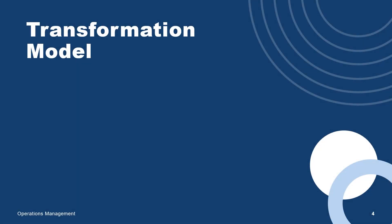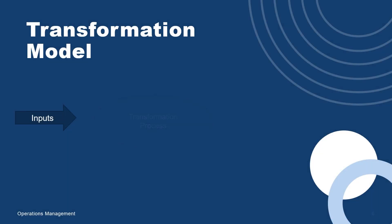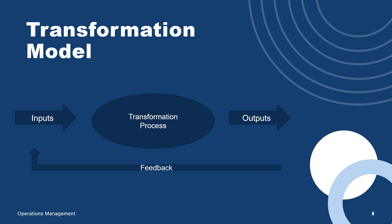That is done through a process we call the transformation process, or using the transformation model. On one end we have inputs — the raw materials. From an operations management perspective, it's not just raw material; people, resources, and information are all inputs because they are part of the transformation process. And then that output may not be a product — that output could be a service. So you want to make sure you're looking at this from a product and service perspective.